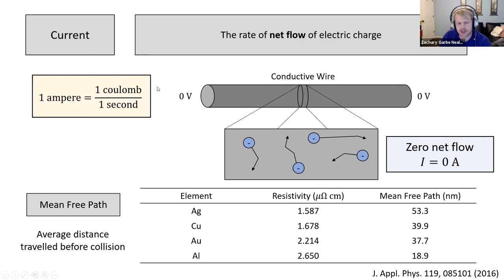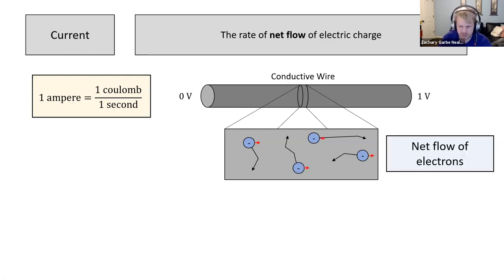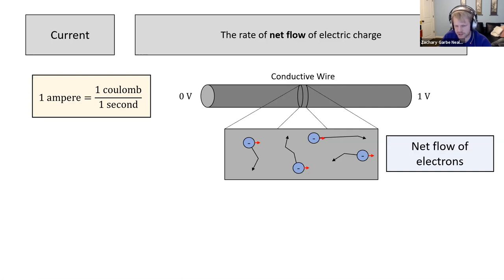If we put a potential difference — say one volt — across the two ends of this wire, we would have a net flow of electrons. By convention, current flows from positive to negative potential. Current is defined as the movement of positive charge, but realistically we think of the movement of electrons, which are negative. So electrons flow in the opposite direction of current — toward the higher positive potential, which is lower potential for electrons.